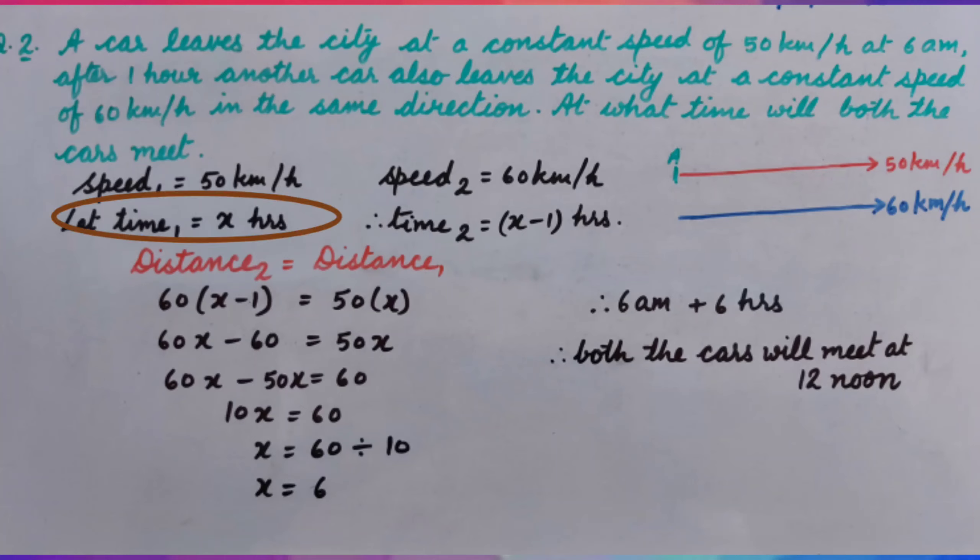Let first car travel for x hours. So, time taken by second car will be x minus 1 hours because it starts after 1 hour.